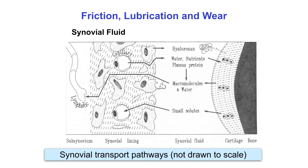Synovial fluid is a viscous non-Newtonian fluid with about the consistency of egg whites. It is a blood plasma ultrafiltrate, so it has plasma proteins and electrolytes, but it also contains hyaluronic acid secreted by fibroblast-like cells in the synovial membrane, and a lubricating proteoglycan known as lubricin secreted by the chondrocytes in the superficial zone cartilage. Synovial fluid gives cartilage impressively low friction and wear.